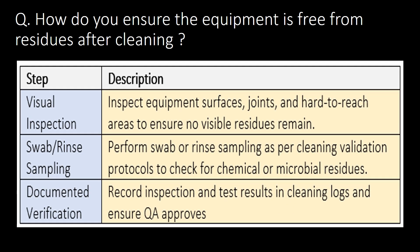How do you ensure the equipment is free from residues after cleaning? There are three steps. Step 1 - Visual inspection: Inspect the equipment surfaces, joints and hard-to-reach areas to ensure no visible residues remain. Step 2 - Swab or rinse sampling: Perform swab or rinse sampling as per cleaning validation protocols to check for chemical or microbial residues. Step 3 - Documented verification: Record inspection and test results in cleaning logs and ensure QA approves it.